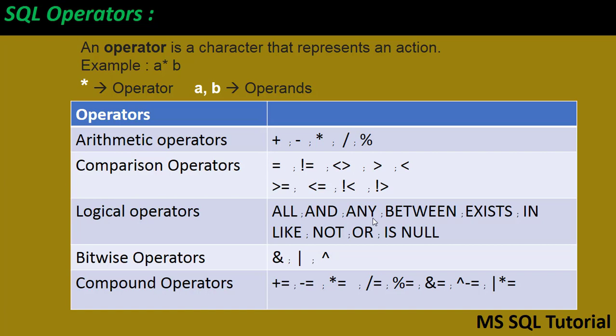Next, compound operators: add equals (+=), subtract equals (-=), multiply equals (*=), divide equals (/=), modulo equals (%=), bitwise AND equals, bitwise exclusive OR equals, and bitwise OR equals. These are all the compound operators we are going to use in SQL.